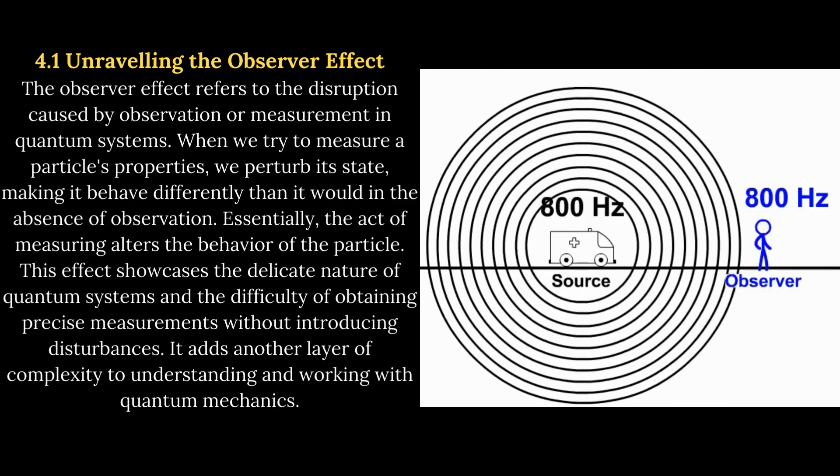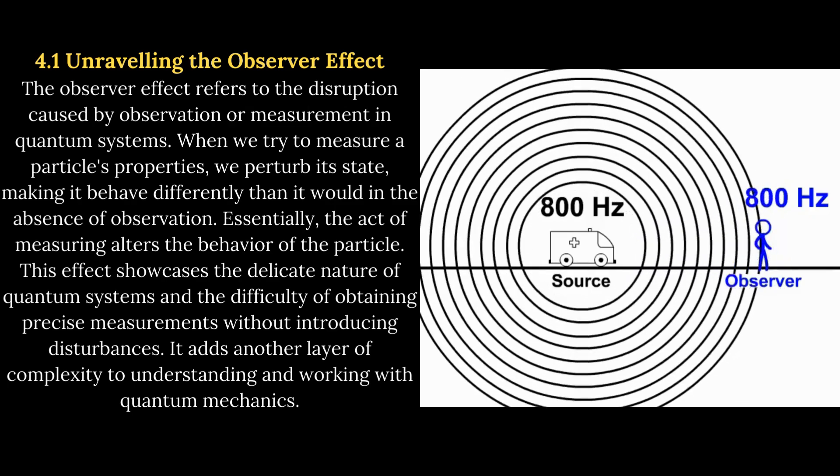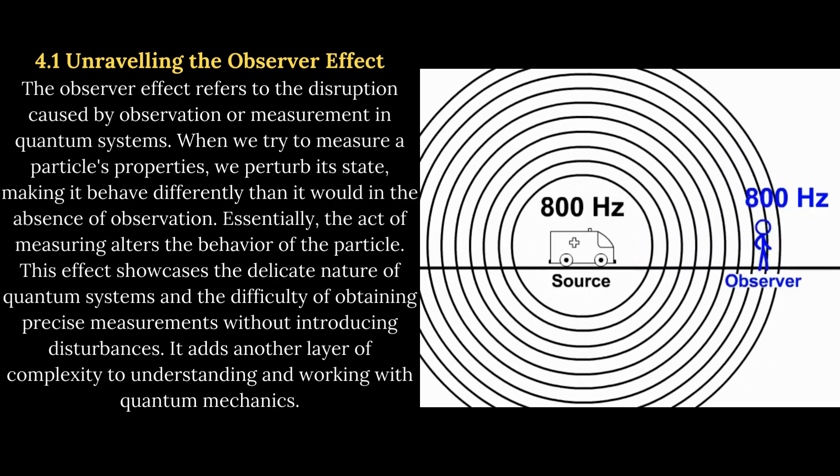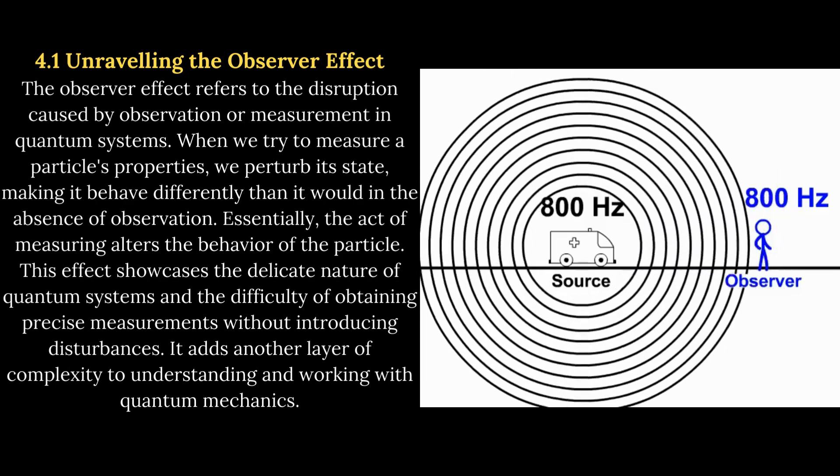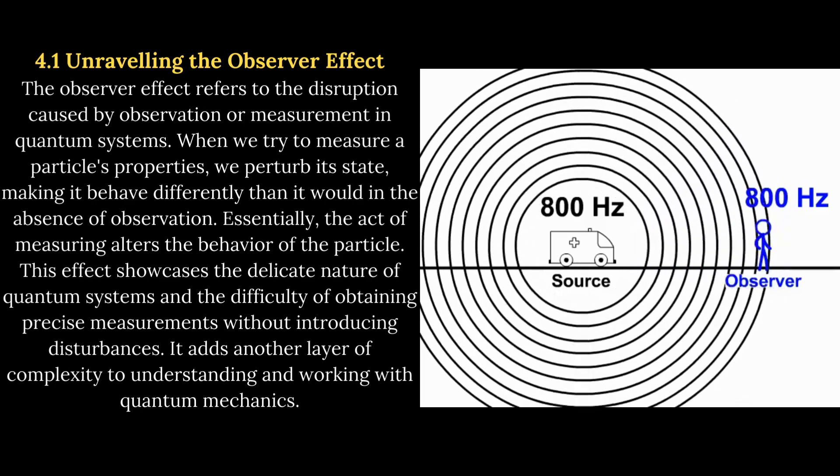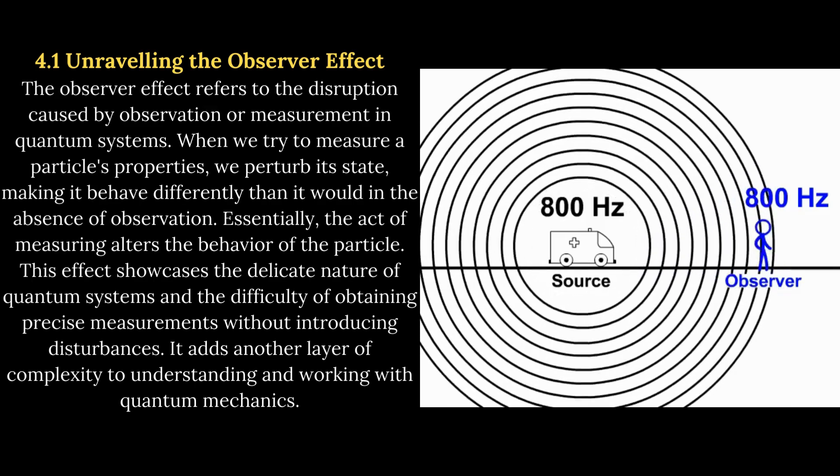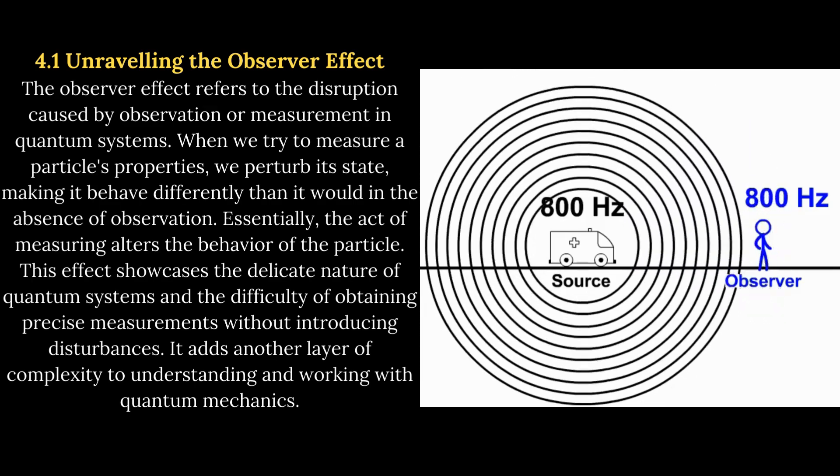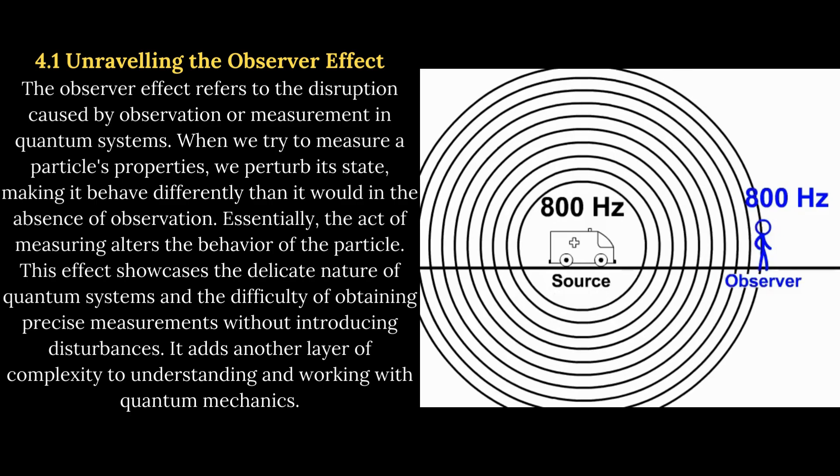Essentially, the act of measuring alters the behavior of the particle. This effect showcases the delicate nature of quantum systems and the difficulty of obtaining precise measurements without introducing disturbances. It adds another layer of complexity to understanding and working with quantum mechanics.